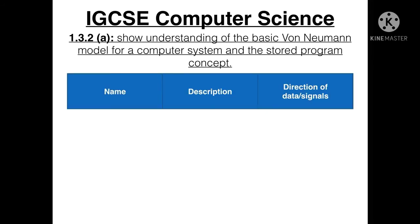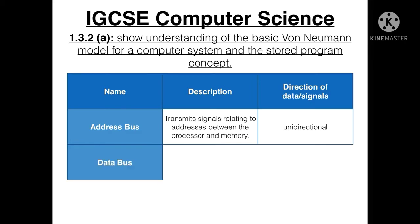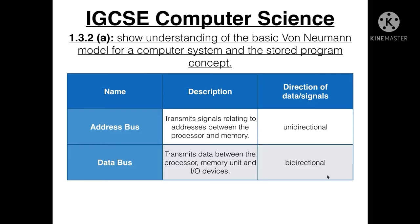Each bus has a name, description, and direction of data or signals. The address bus transmits signals relating to addresses between the processor and memory, and its direction is unidirectional — signals travel in one direction. The data bus transmits data between the processor, memory unit, and input/output devices, and it is bidirectional — data can travel in both directions.